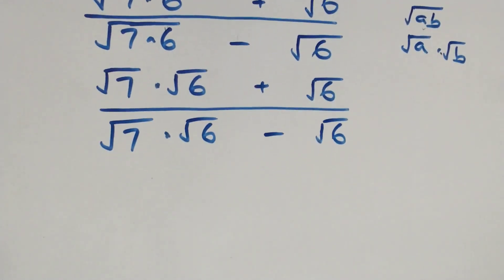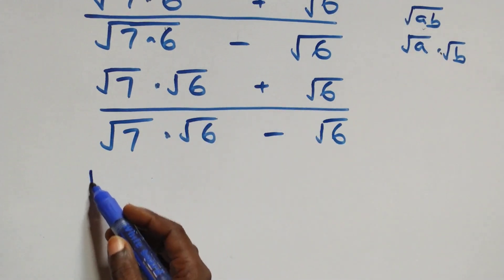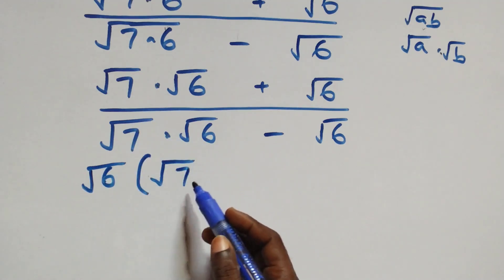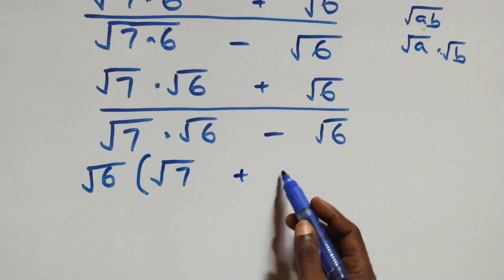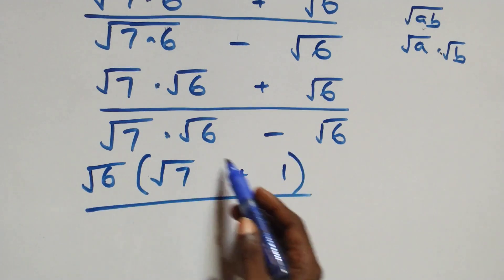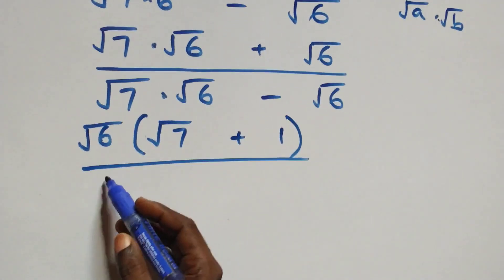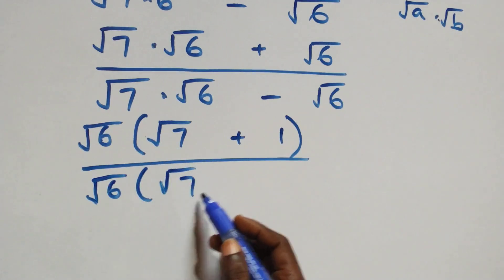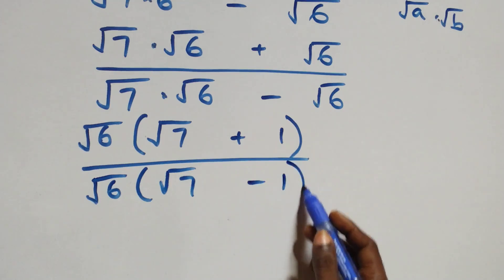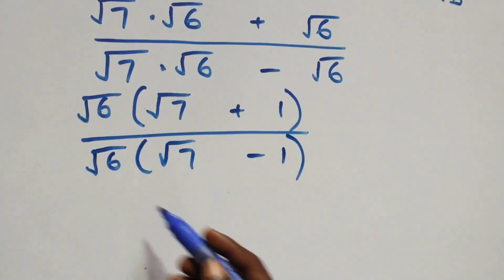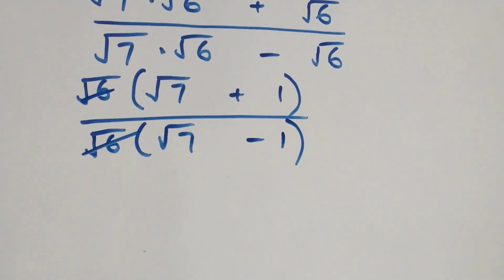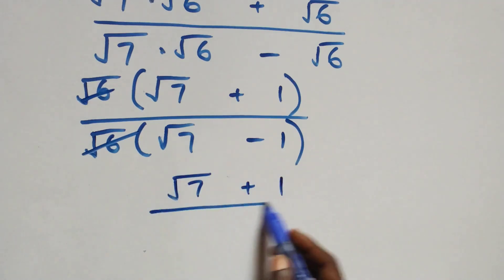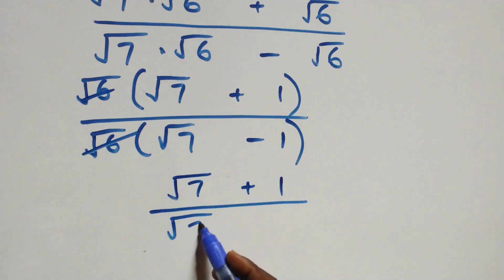Next, we factor √6 from the numerator to get √6(√7 + 1), and from the denominator to get √6(√7 − 1). The √6 cancels, leaving us with (√7 + 1) / (√7 − 1).